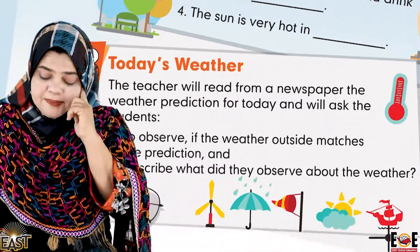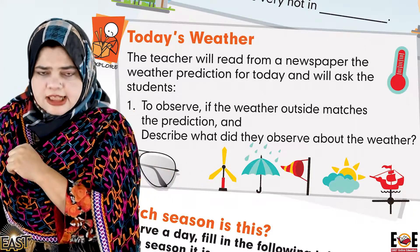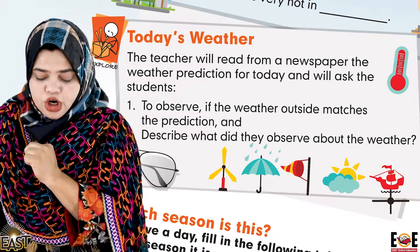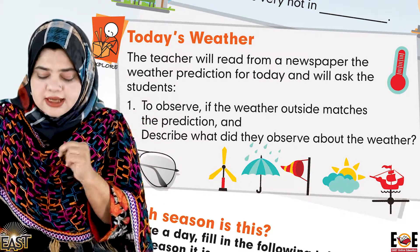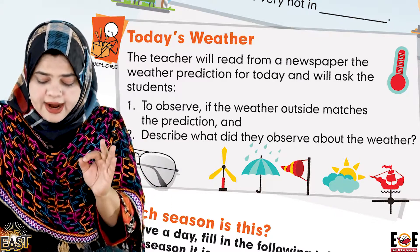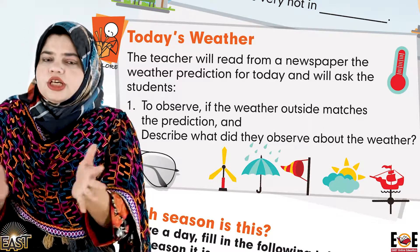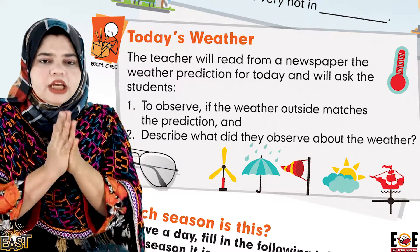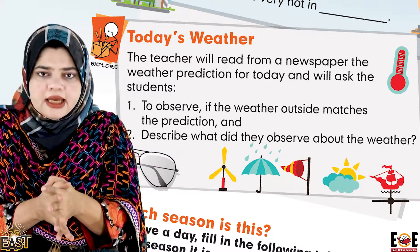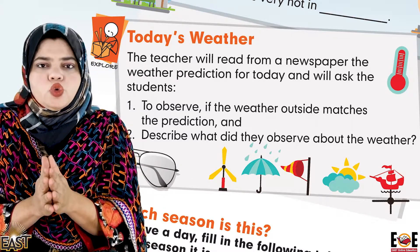Chanye ji, hamare paas ati explore ki activity hai. Usme dekhte hain: today's weather kya bataya ja raha hai. Kya pucha ja raha hai — 'The teacher will read from a newspaper the weather prediction for today and will ask the students to observe if the weather outside matches the prediction, and describe what they observe about the weather.' Aapke paas akhbar aate hain, newspaper aate hain. Agar newspaper nahi aate toh koi baat nahi — aapke paas mobiles maujud hain, tablets maujud hain.